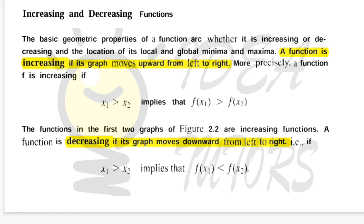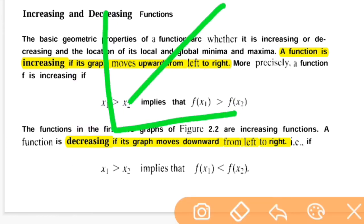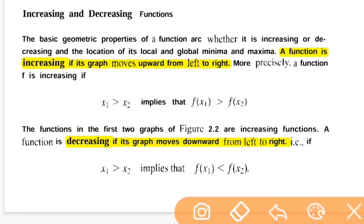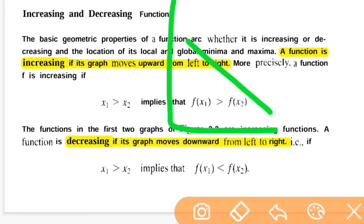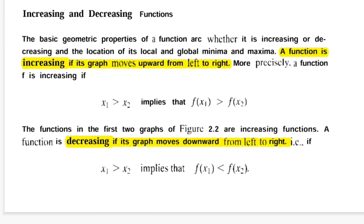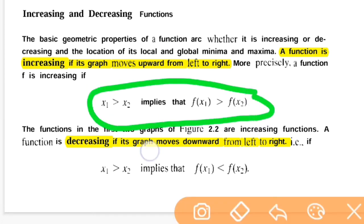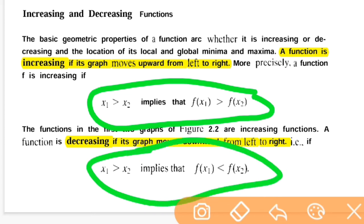A function can be increasing or decreasing depending on how it behaves. A function is increasing if its graph moves upward from left to right, just like a supply curve. A decreasing function is one whose graph moves downward from left to right, like a demand function. Mathematically, if for values x1 and x2, f(x1) is greater than f(x2), it is an increasing function. Similarly, if f(x1) is less than f(x2), it is a decreasing function.